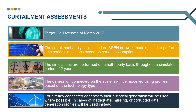Once the process is concluded, it will be sent out to the customer in the form of a feasibility study. The simulations are performed on a half-hourly basis throughout a simulated period of two years using historical data. For already connected generators, their historical generation will be used where possible. In cases of inadequate, missing, or corrupted data, generation profiles will be used instead. For the customer that is applying, if they have a bespoke or known profile, that can be provided to SSEN to use within an assessment. Otherwise, a generic profile for that technology type will be used.